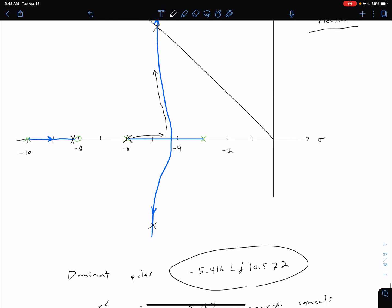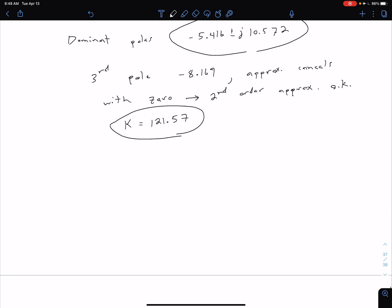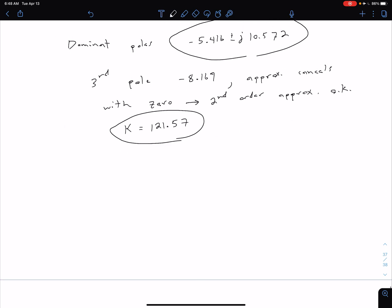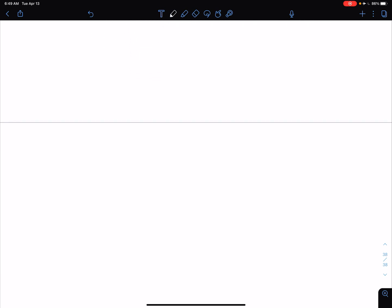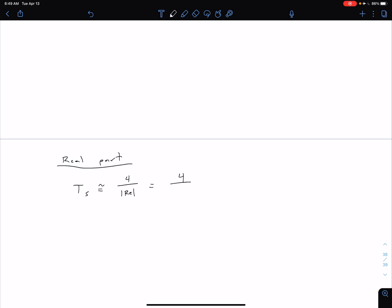Okay. So now that we know we can use our second order approximation, and we know the location of our dominant poles, we can talk about some of our time response characteristics. So let's start by looking at our settling time. So we know from the settling time, we're using the real part of our dominant poles, and we can say our settling time is equal to approximately 4 divided by the magnitude of that real part. And so coming up here, we saw that that real part is negative 5.416. So I can divide this by 5.416. And I get that my settling time is approximately 0.739 seconds.